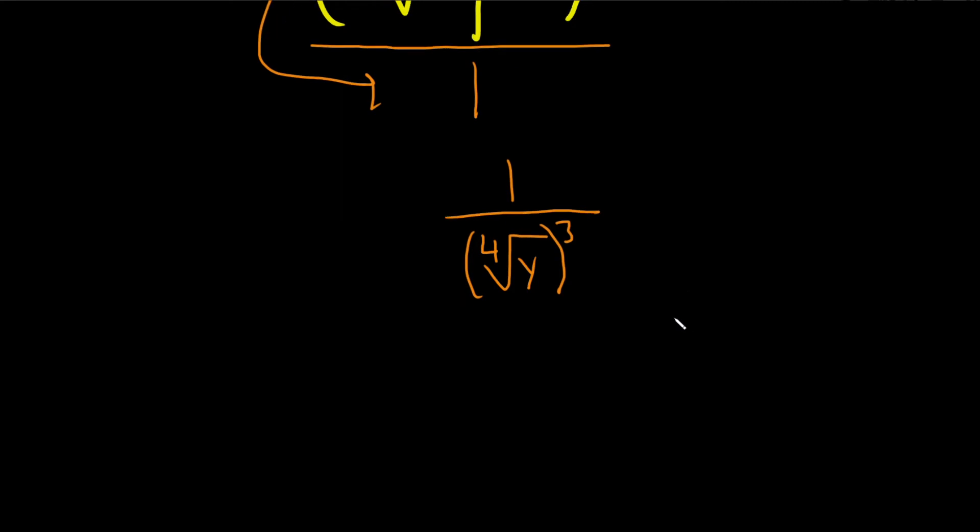So there's a couple ways to think about this. Method 1 is to just use the formula. I'm going to write it here on the side. So if you have the nth root of, let's just say a, and the m is here, this is the same thing as a to the m over n.